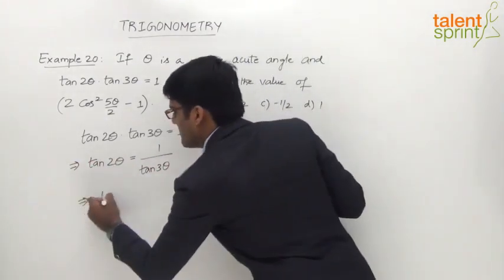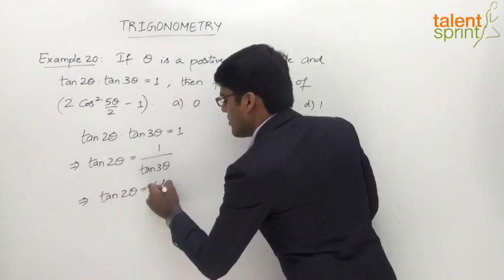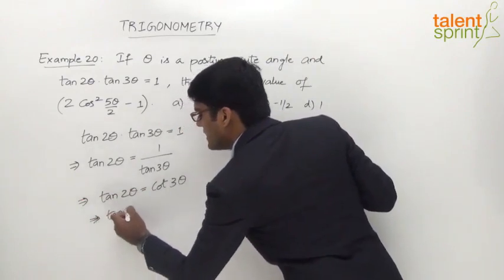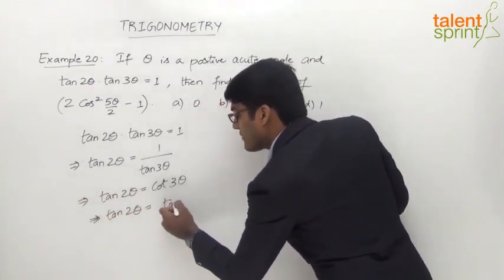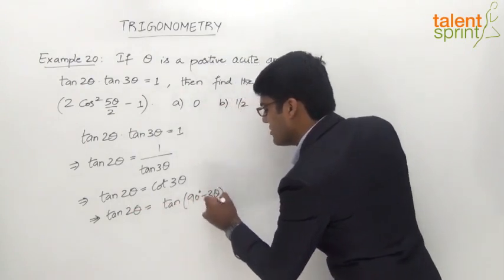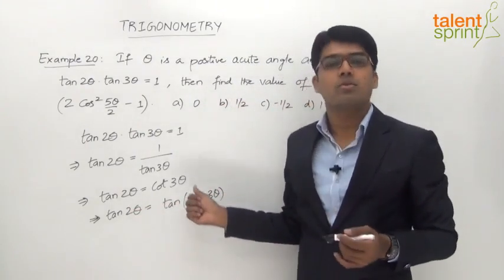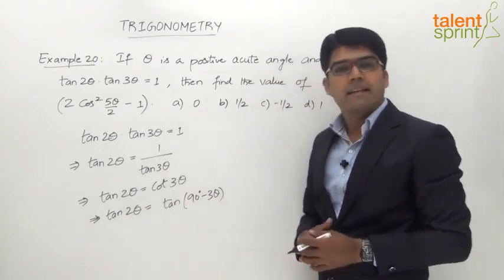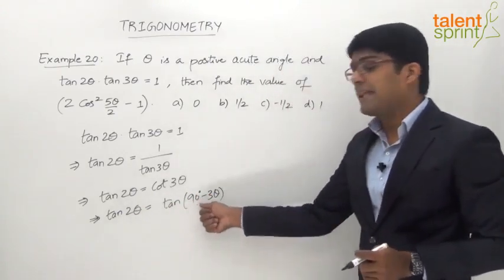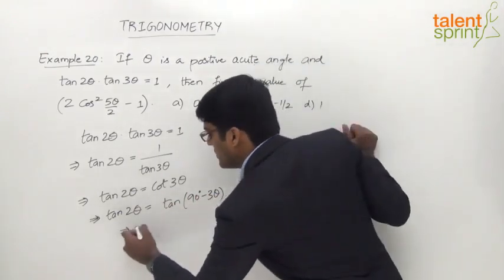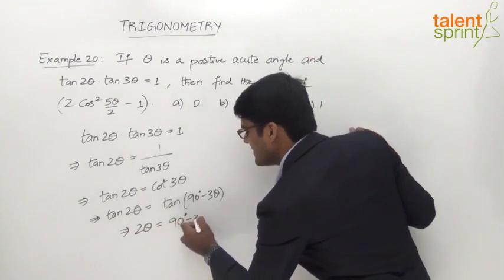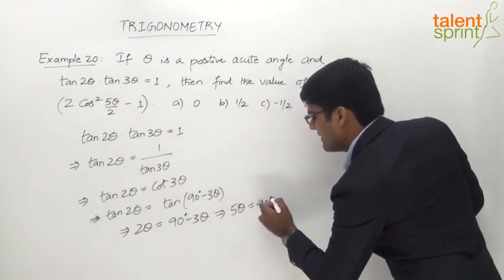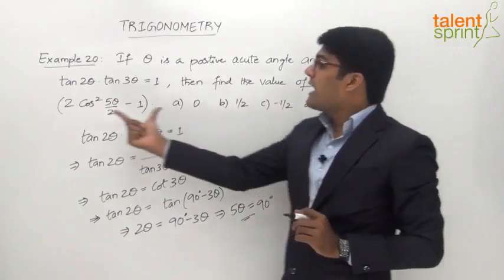So tan 2 theta equals cot 3 theta. We know that tan(90° - x) = cot x, so cot 3 theta can be written as tan(90° - 3 theta). Comparing both sides, tan 2 theta equals tan(90° - 3 theta), which gives us 2 theta = 90° - 3 theta, and therefore 2 theta + 3 theta = 5 theta = 90 degrees.